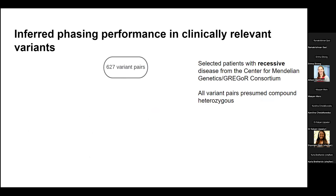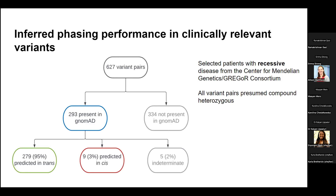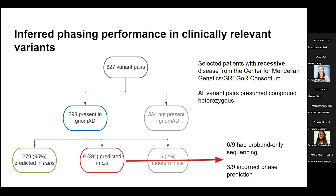We tested this phasing tool in selected patients with recessive disease from the Center for Mendelian Genetics and the Gregor Consortium, where all variant pairs were presumed heterozygous. We started with 627 variant pairs. When we looked at which were actually present in GnomAD, we came down to 293. Of those, about 280 — 95% — were predicted in trans, and nine were predicted in cis. Of those nine in cis, six had only proband sequencing, so we couldn't validate clinically. Of the three with trio sequencing, the phase prediction was incorrect, but overall accuracy looked pretty solid.